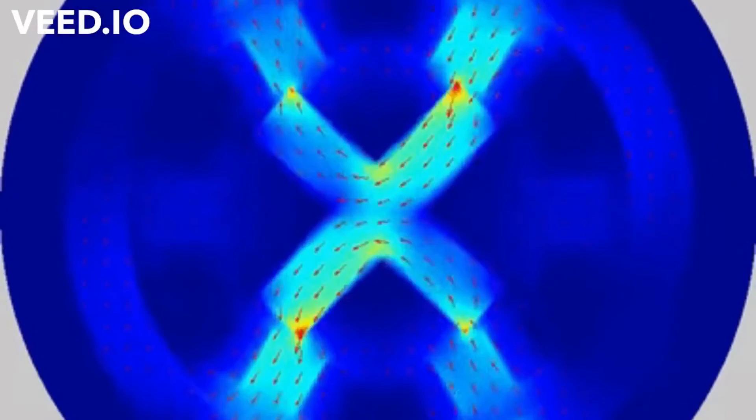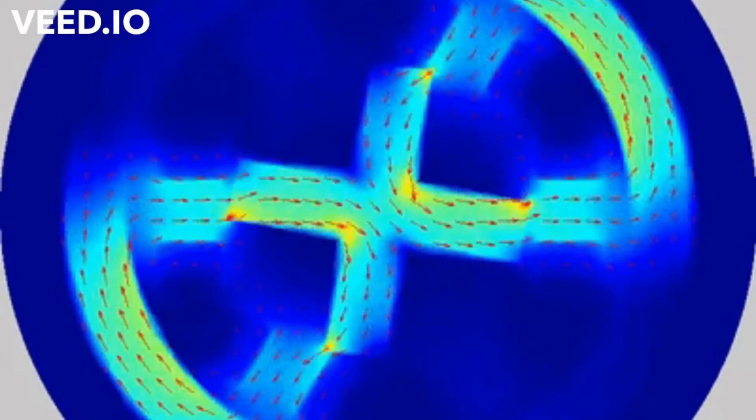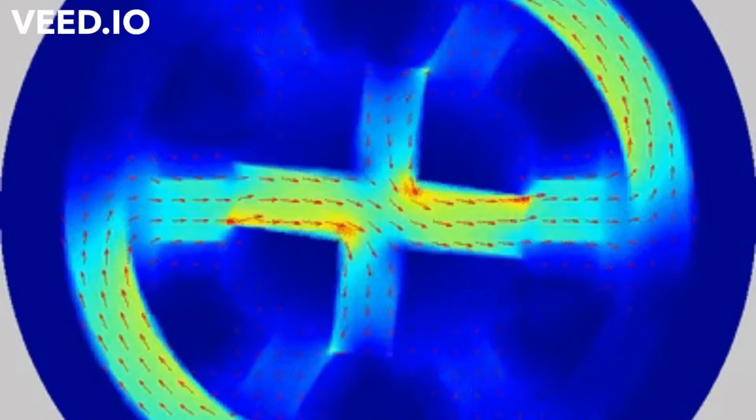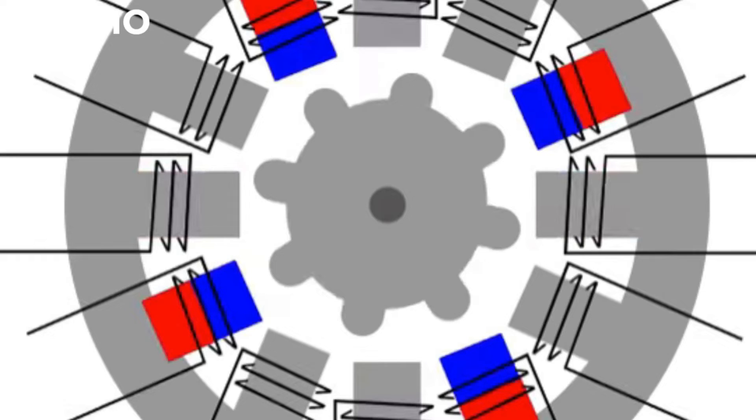Switched reluctance motor. The stator and the rotor of the switched reluctance motor consist of salient poles. The stator has a concentrated winding, which means that each tooth carries one winding.